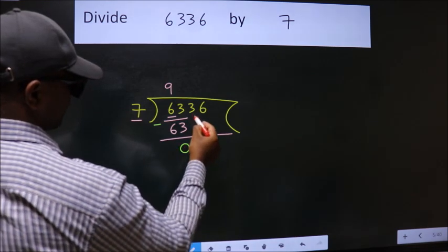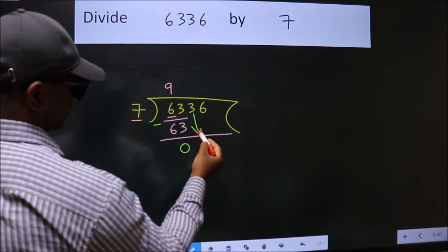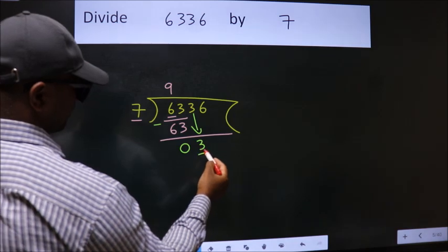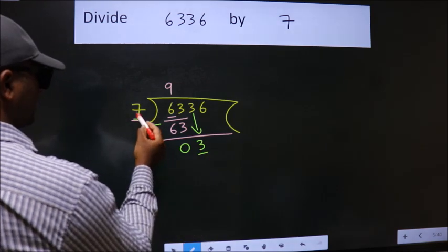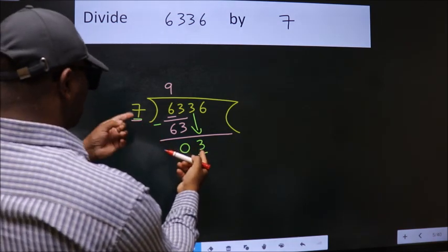After this, bring down the next number. So 3 down. Here we have 3, here 7. 3 is smaller than 7.